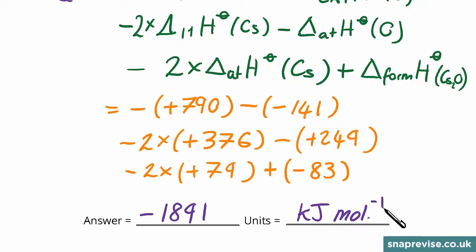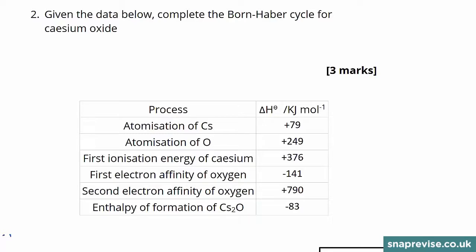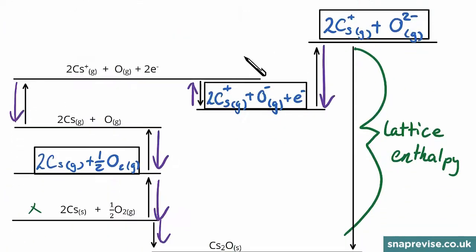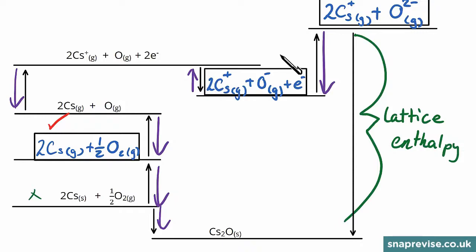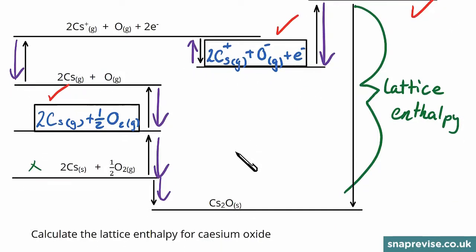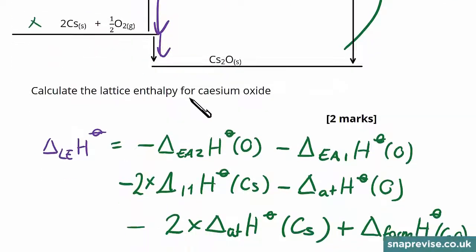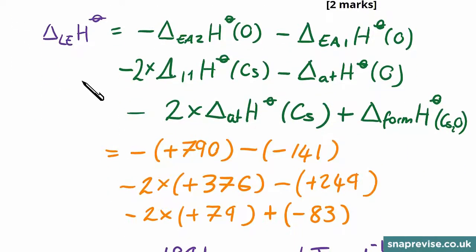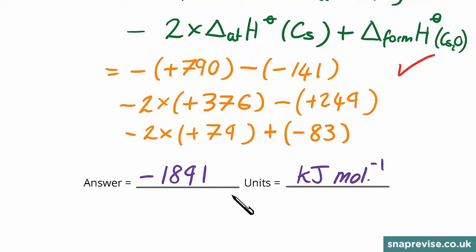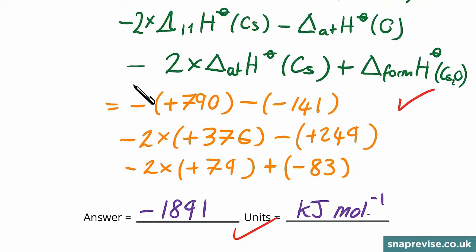Let's look at where the marks come from. There are three marks for filling in the empty Born-Haber cycle — each box must be completely correct, and remember to include the electron. There are two further marks for the calculation: one for attempting the correct route through all the enthalpy changes in the right order, and one for the correct final answer with units. That's five marks for this question.